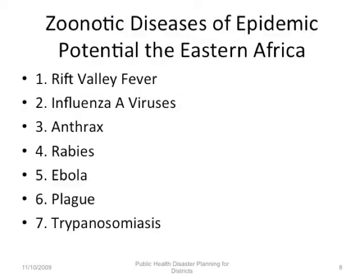The priority zoonotic diseases of epidemic potential in Eastern Africa include Rift Valley Fever, influenza A viruses, anthrax, rabies, Ebola and other viral hemorrhagic fevers, plague, and trypanosomiasis.